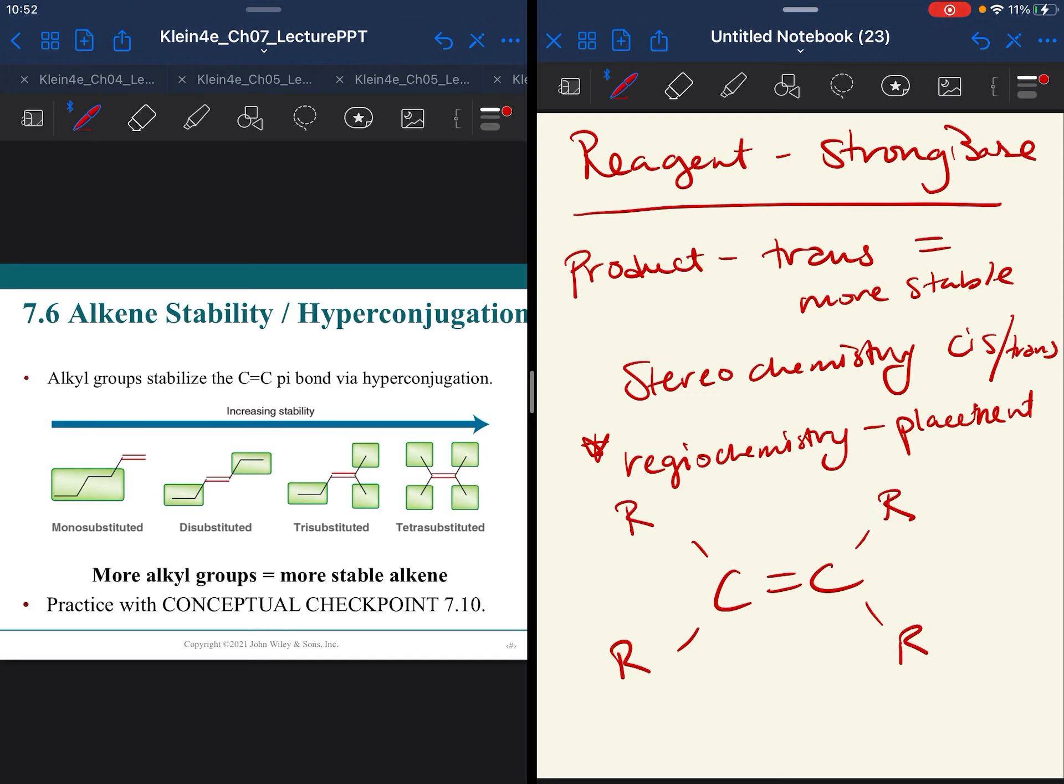And how many of those are hydrogens versus R group will determine stability. So if you have 1, 2, 3, or 4 makes a difference, respectively, mono, di, tri, and tetra-substituted.